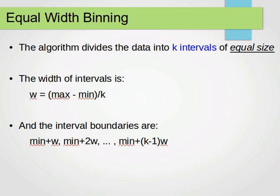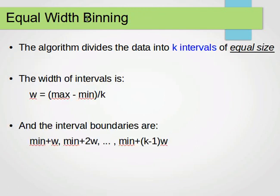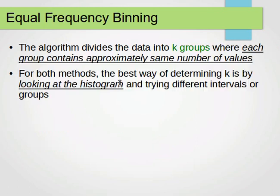For equal frequency binning, we're talking about the count of occurrences — how many times something appears. The algorithm divides the data into k groups where each group contains approximately the same number of values. In equal width we had intervals of equal size; here we have k groups each with approximately the same number of values.